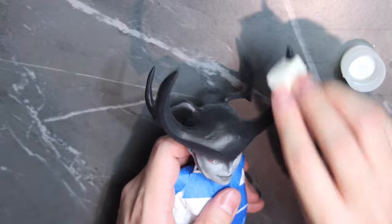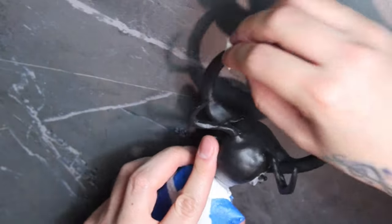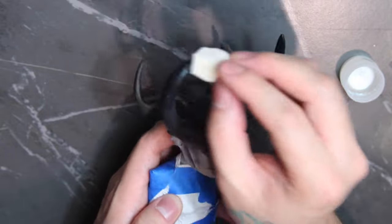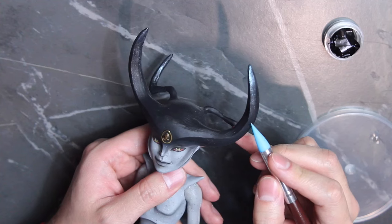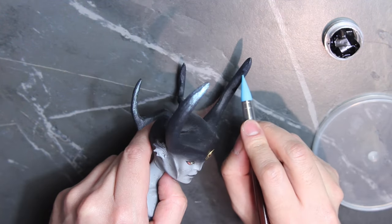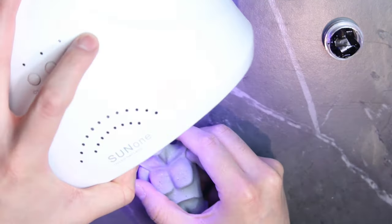To add something to the horns, first I'm applying Folkart Dragonfly Glaze with the sponge and blend it down to the middle. After that, I'm adding some splatters of UV resin to the horns. Cure them with my UV lamp.